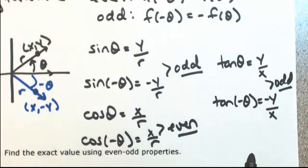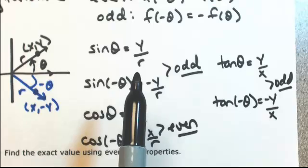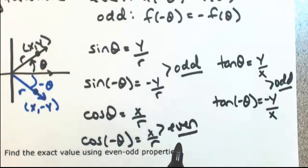Sine and tangent are odd functions, which means their reciprocals are also odd: cosecant and cotangent. The only even functions are cosine and its reciprocal, secant.